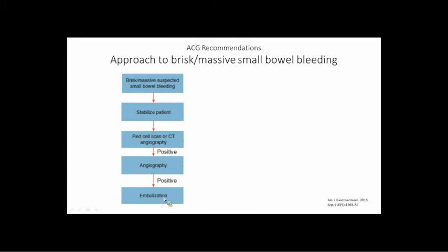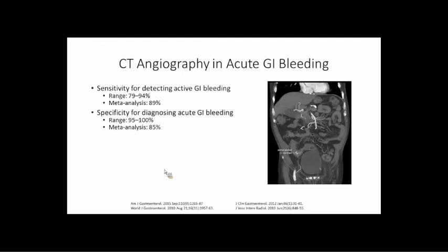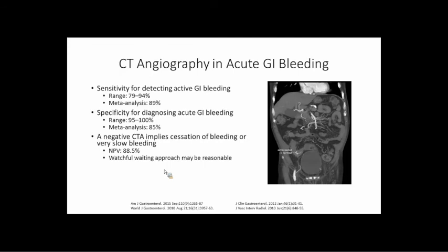This patient has an overt brisk small bowel bleed. The first step is always to stabilize the patient. The next step is usually a red cell scan or CT angiography — most of us probably do a CT angio as local practice. If the CT angio is positive, the patient can go on to angiography with IR and have an embolization. If the patient is unstable, they may go directly to angiography. CT angiography is actually a fantastic study — sensitivity for detecting active bleeding is 79 to 94%, and in meta-analysis the sensitivity was about 89%.